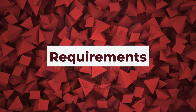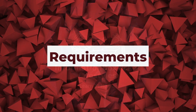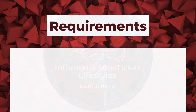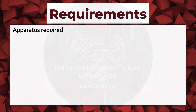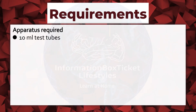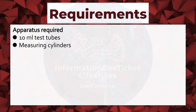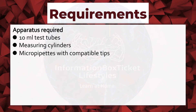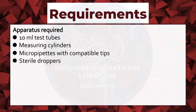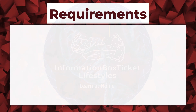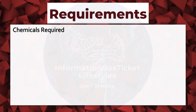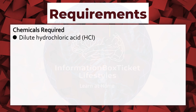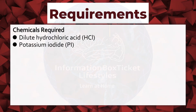Requirements for Phytochemical Screening. Apparatus required: 10-milliliter test tubes, measuring cylinders, micropipettes with compatible tips, sterile droppers. Chemicals required: dilute hydrochloric acid, potassium iodide, iodine solution.